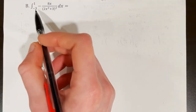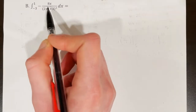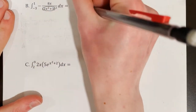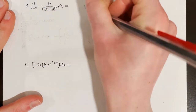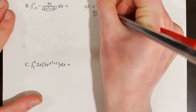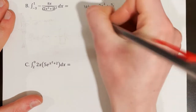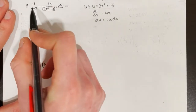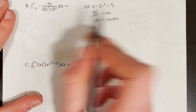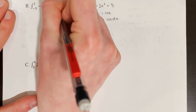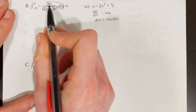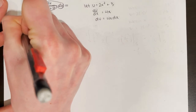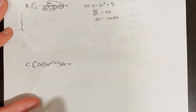In part B, we are evaluating the integral from negative 3 to 1 of this function with respect to x. The first thing I'm going to do is set u equal to 2x squared plus 3. Then I take the derivative: du/dx equals 4x. Moving dx over, du equals 4x dx. Now I need to get 4x dx in my original equation. I have 8x dx, and I can get that to 4x dx by pulling a 2 out. At this point I'm still keeping my x bounds because I haven't made the switch to u yet.